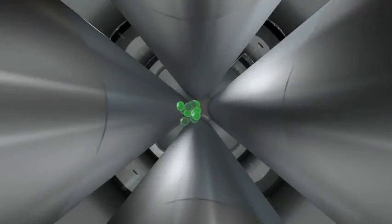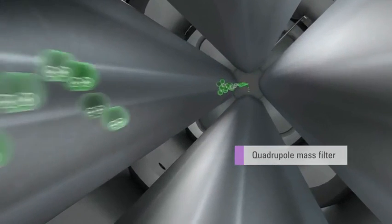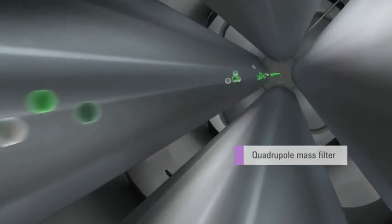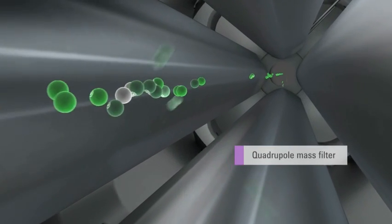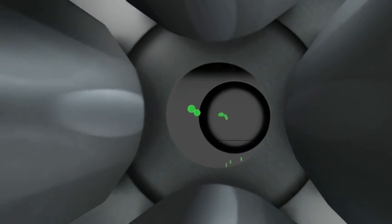The second quadrupole serves as a mass filter for the fragment ions produced in the collision cell. For quantitative analysis of a target compound, the second mass filter is operated in a selected ion monitoring mode.